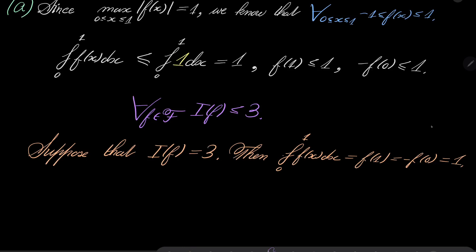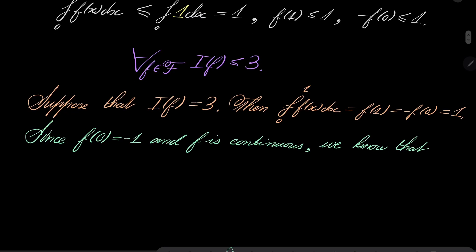Now we wish to exclude this possibility of equality. Notice that suppose I(f) actually equals 3. Then here must be equality, here must be equality, and here as well. So integral from 0 to 1 of f(x) dx must equal f(1), must equal minus f(0), and must equal 1. But now notice that our function f(0) is -1. Since f(0) is -1 and since f is continuous, we know for sure that f(x) is less than or equal 0 for x's between 0 and delta, where delta is some positive number. Continuous function cannot be just negative at one point.